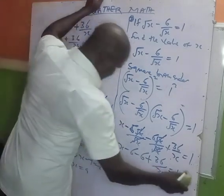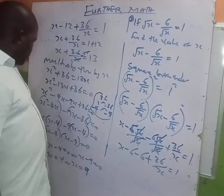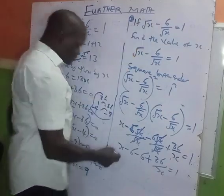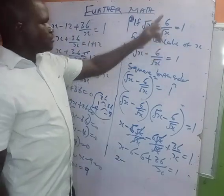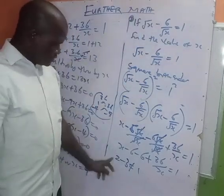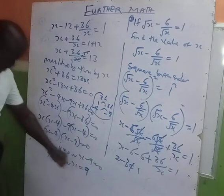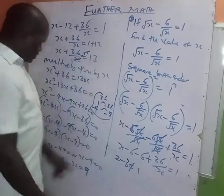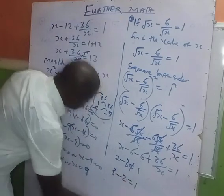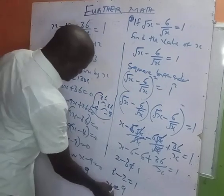Now check which value is valid. Try x = 4: √4 = 2, so (2 - 6)/2 = -4/2 = -2, which is not equal to 1. So x = 4 is not the answer. Try x = 9: √9 = 3, so (3 - 6)/3 = -3/3 = -1... wait, 3 - 2 = 1. Therefore the answer is x = 9. Thanks for watching.